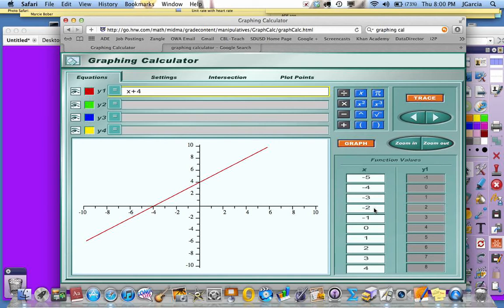Negative 2, 2. Negative 1, 3. This is 0, 4. This is a great way to check your t-tables and graphs that you do in class or at home for homework.